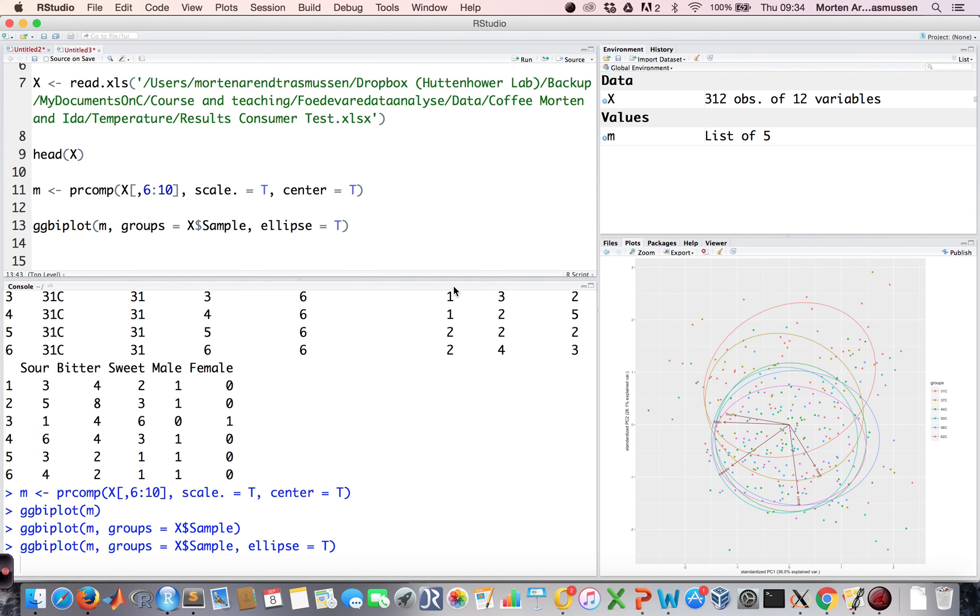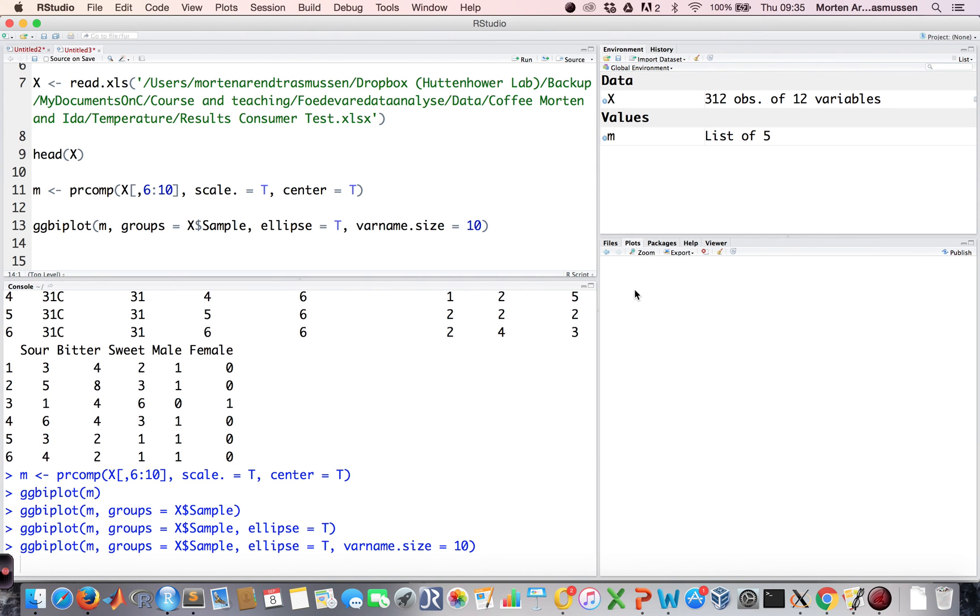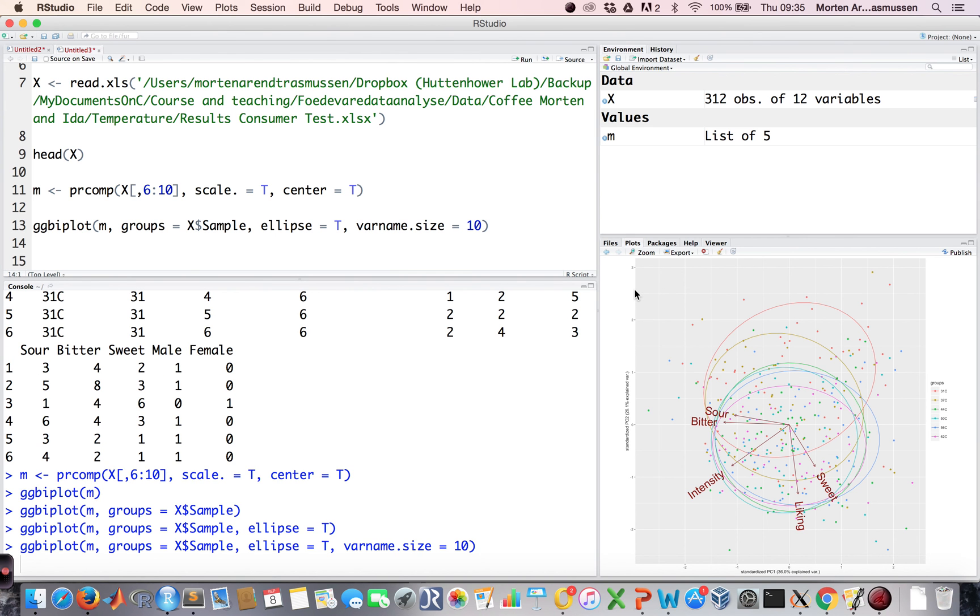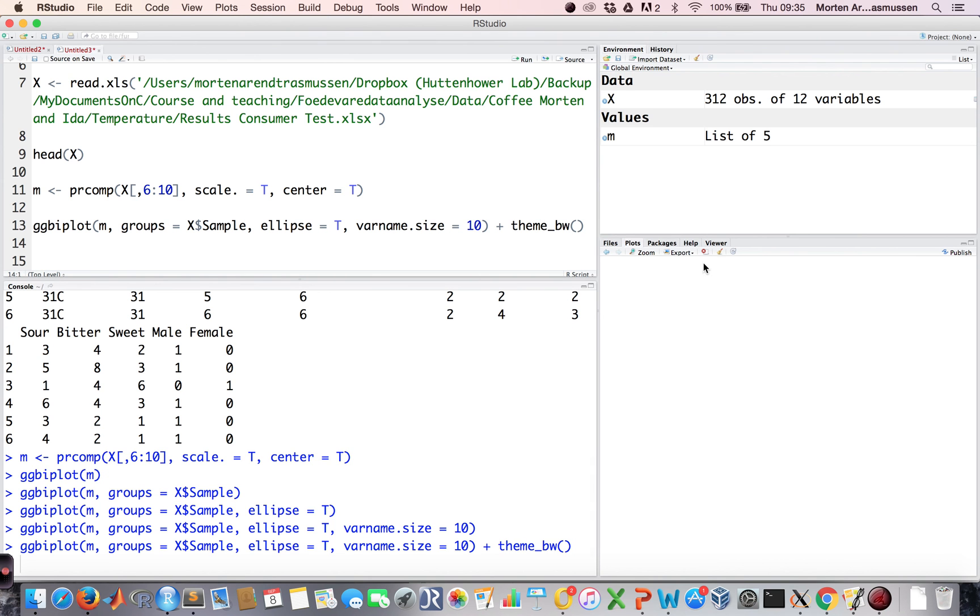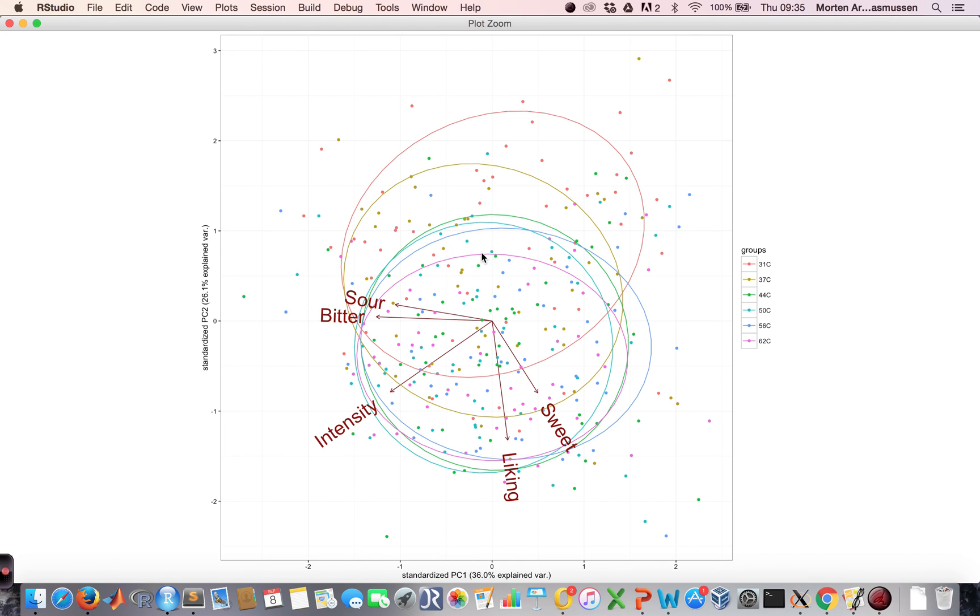We can further make this plot a little more nice. We can say, well, the names, we can't really look at them because they're too small. So let's make them a little bigger. And then I'm annoyed by the background being gray. So I want it to be white. So this is a pretty nice biplot of five descriptors of coffee served for a bunch of different consumers at different temperatures.